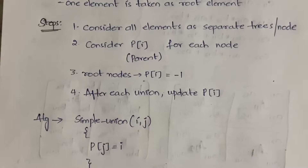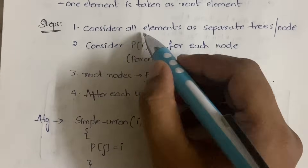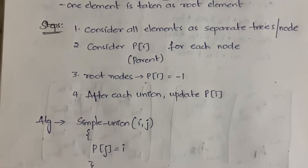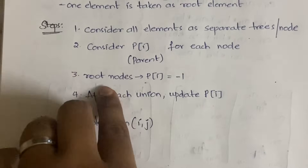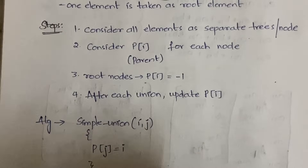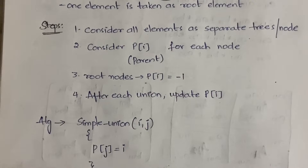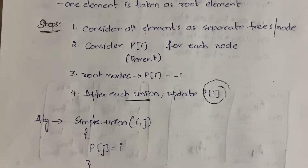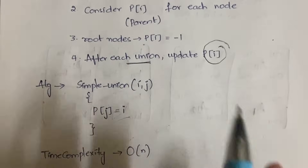Here are the steps for the union algorithm. First, consider all the elements as separate trees or separate nodes. Then consider p[i] for each node — p[i] is the parent value of each node. For all root nodes, initialize p[i] with minus one. After each union operation, you update your p[i] value — specifically, p[j] is updated accordingly.